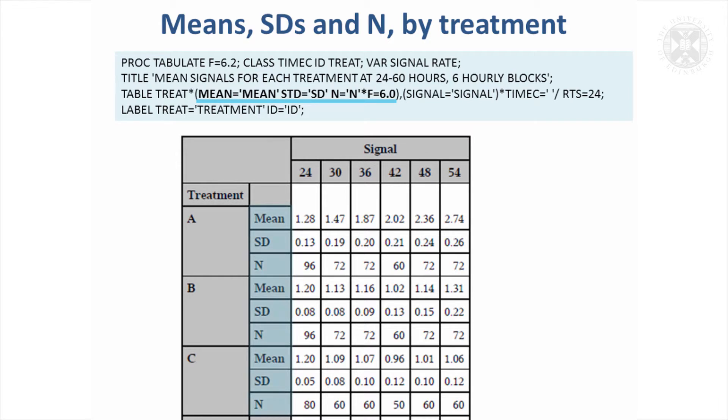And now we're doing this sort of nesting along the rows rather than the columns. So we've got our three summary statistics which are before the comma, so that's done by this treatment star, the three summary statistics with appropriate labels that we've put in. And then after the comma it's just to say we're going to summarize signal and we're going to do it by the time category.